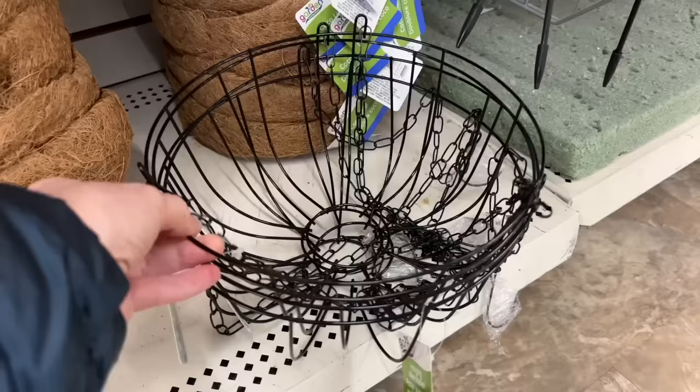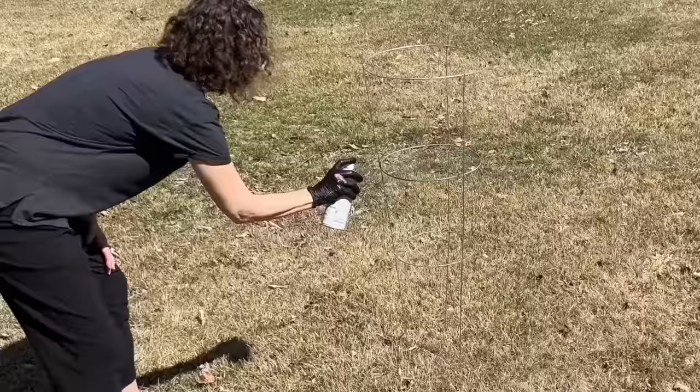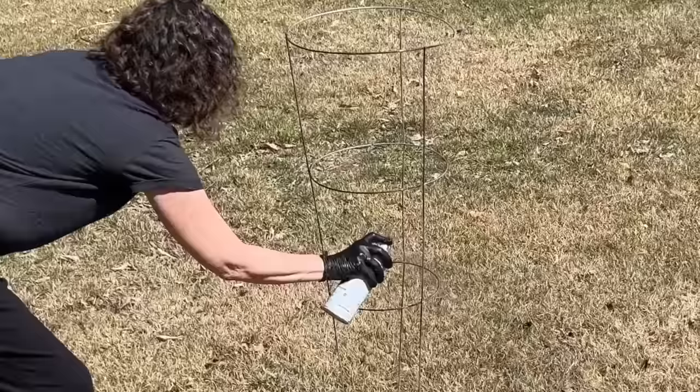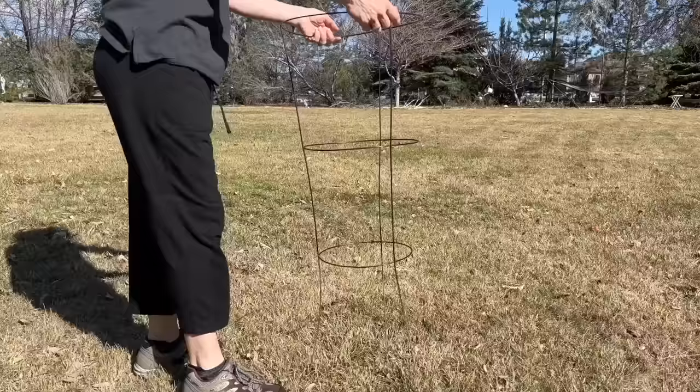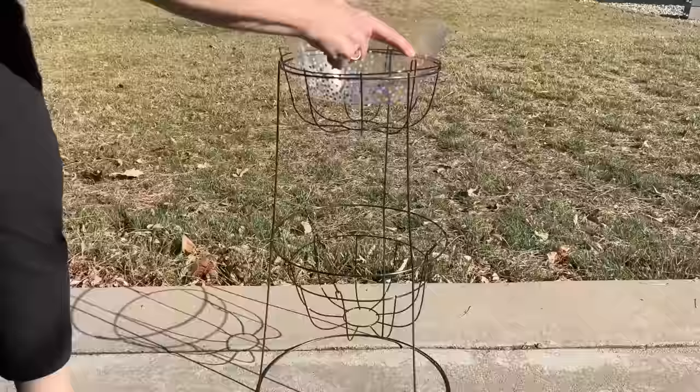Head over to Dollar Tree and grab these hanging flower baskets. You'll also need a tomato cage. I stuck it into the ground and grabbed some black Rust-Oleum spray paint and spray painted the entire tomato cage. Cut the bottom ends off. I placed the flower baskets onto the tomato cage.